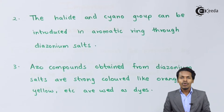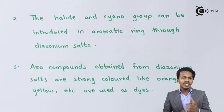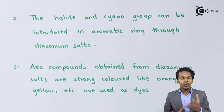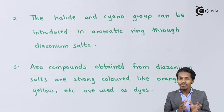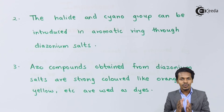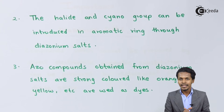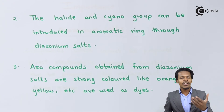For example, if we have to introduce a fluoro group or an iodo group, that also cannot be done directly on benzene. That's the reason we have to consider the benzene diazonium salt. This was the second point.